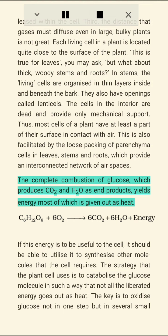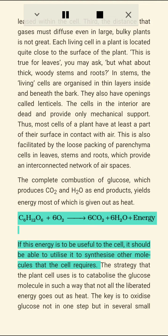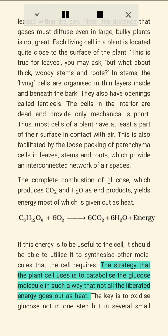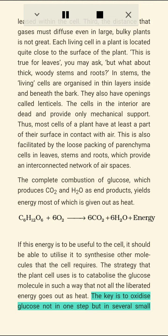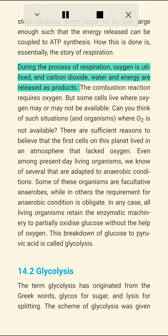The complete combustion of glucose, which produces CO2 and H2O as end products, yields energy most of which is given out as heat. If this energy is to be useful to the cell, it should be able to utilize it to synthesize other molecules that the cell requires. The strategy that the plant cell uses is to catabolize the glucose molecule such that not all the liberated energy goes out as heat. The key is to oxidize glucose not in one step but in several small steps, enabling some steps to be just large enough such that the energy released can be coupled to ATP synthesis. How this is done is, essentially, the story of respiration.